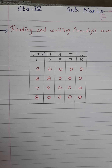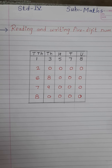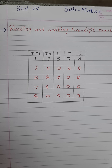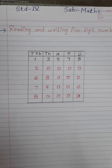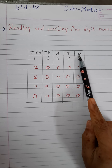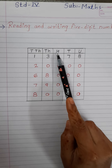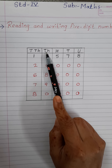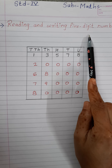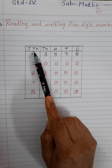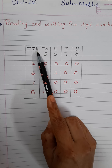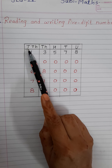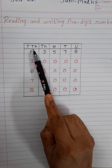Good morning students. Today we will see about 5-digit numbers. For the 4-digit number the place values are unit, tens, hundred, and thousand. For the 5-digit number we will add one more place value — TTH, which means 10,000. T for 10 and TH for 1000.